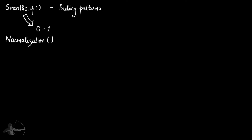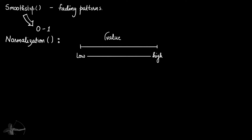Smoothstep is also similar to the normalization function, but there are two very basic differences between normalization and smoothstep. With the smoothstep function, we squeeze a value based on a provided range — the range between a high and low value — and then we squeeze that value between 0 and 1.